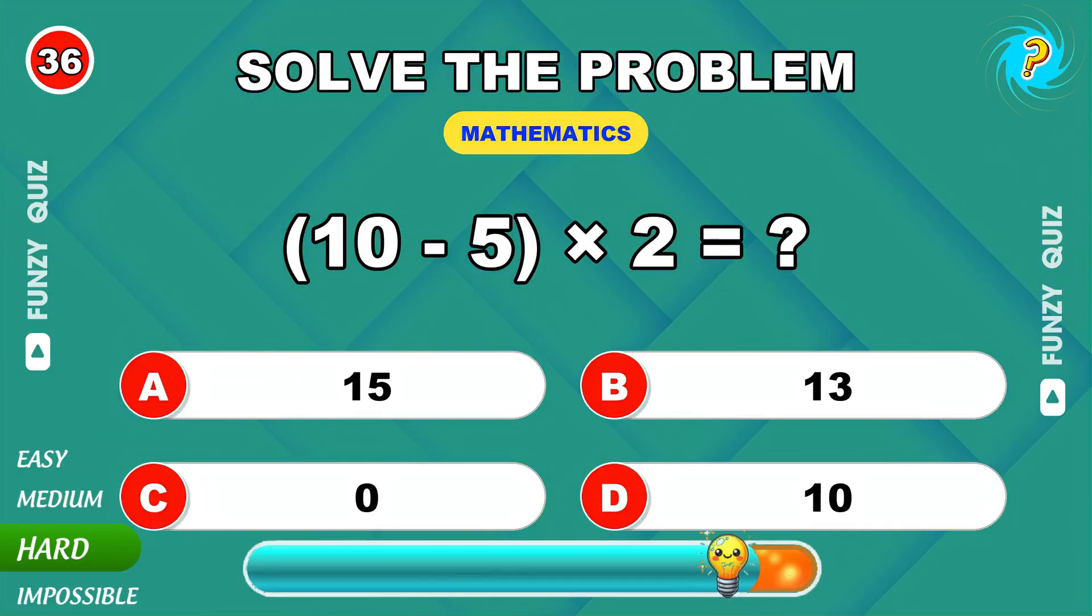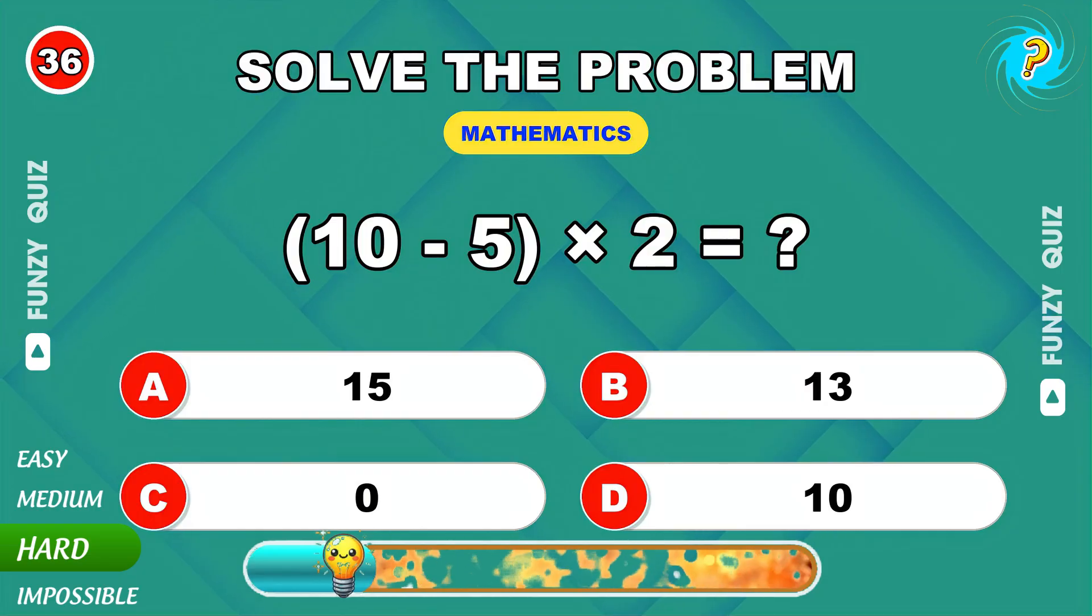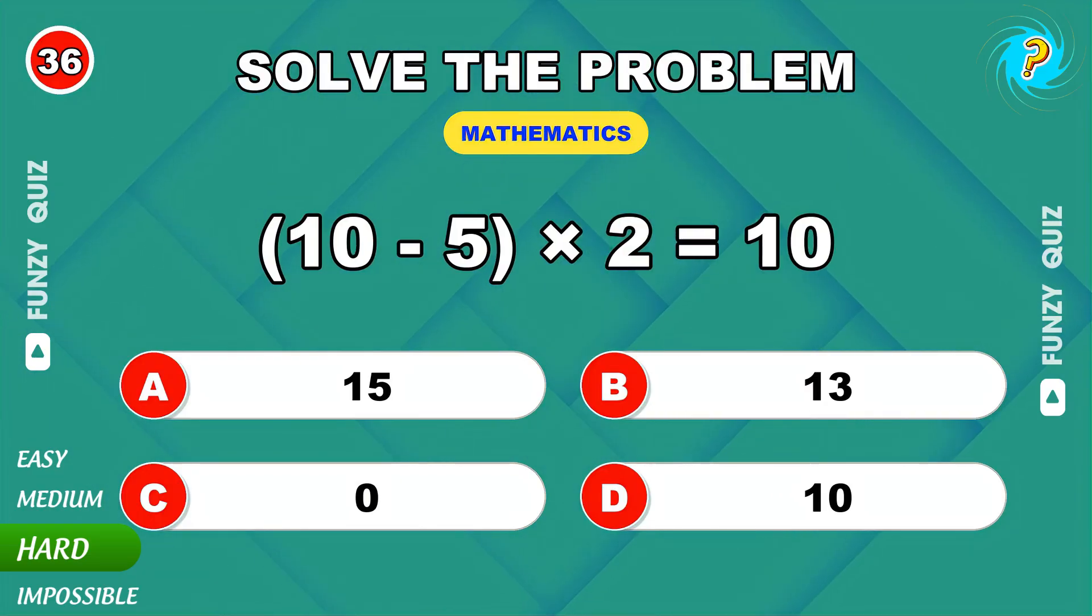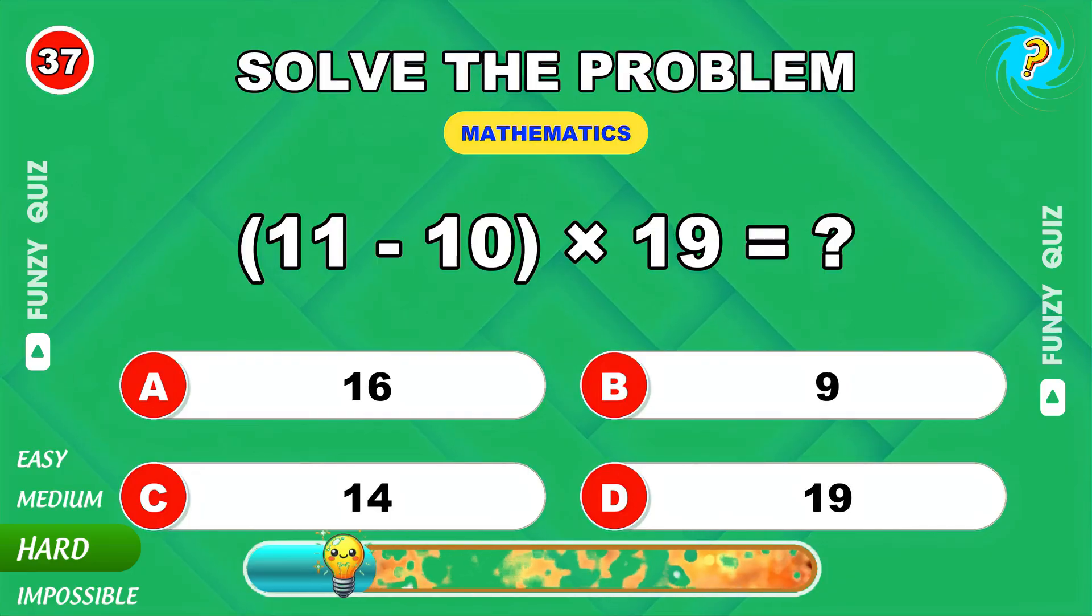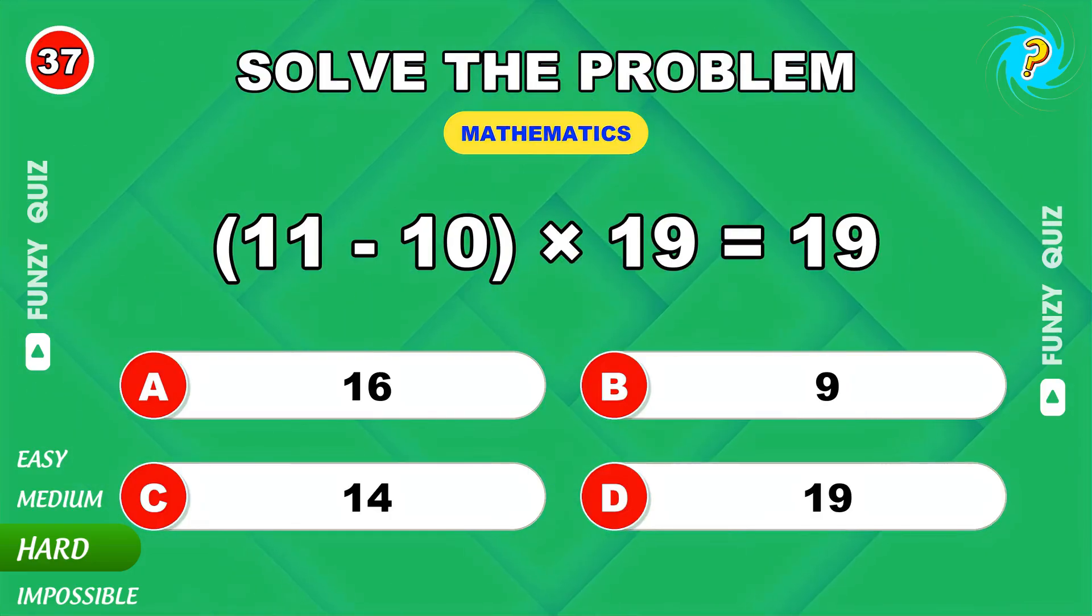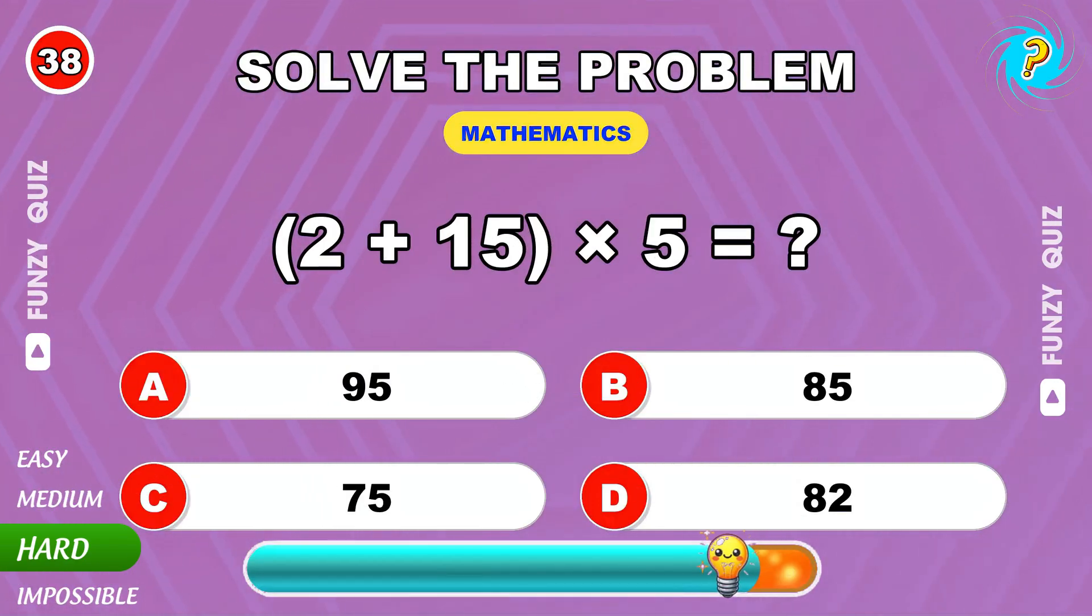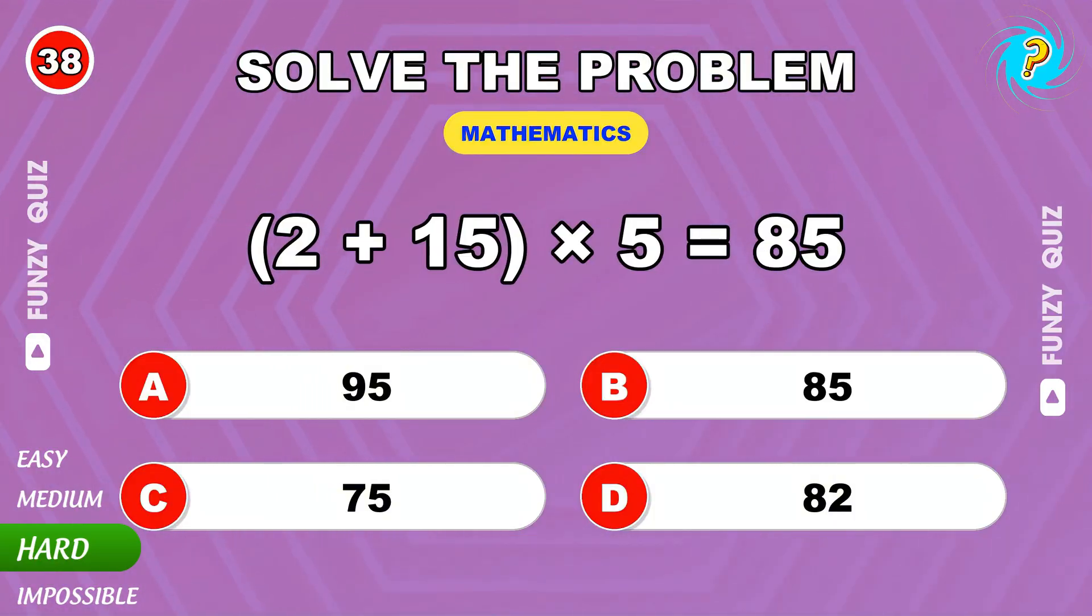10 minus 5 times 2. The solution is 10. 11 minus 10 times 19. 19. 2 plus 15 times 5. The result is 85.